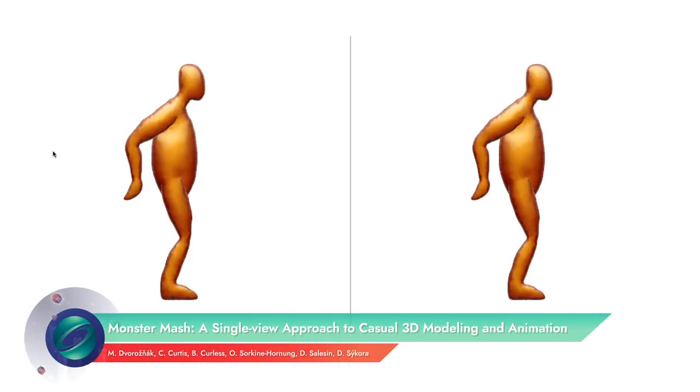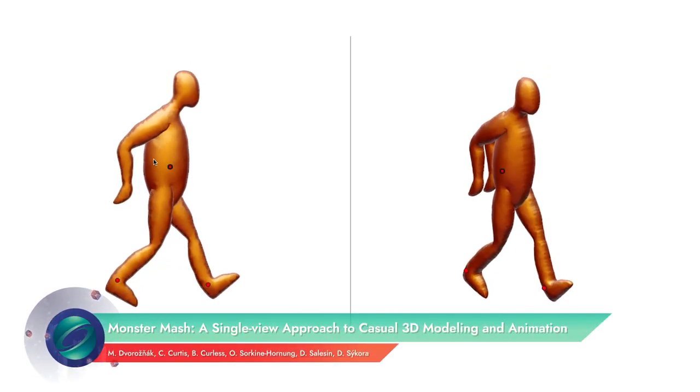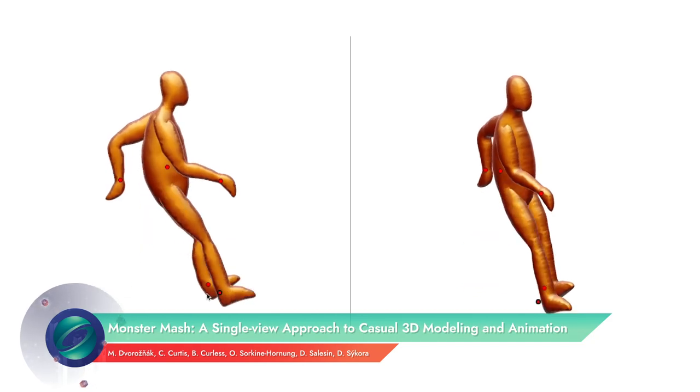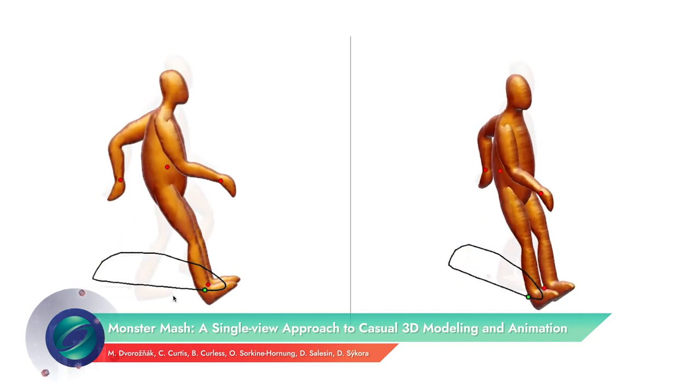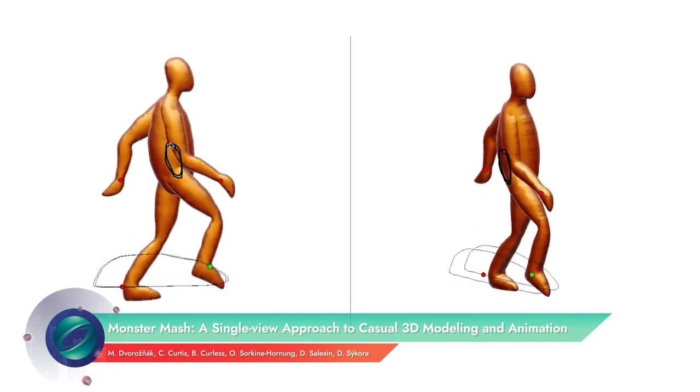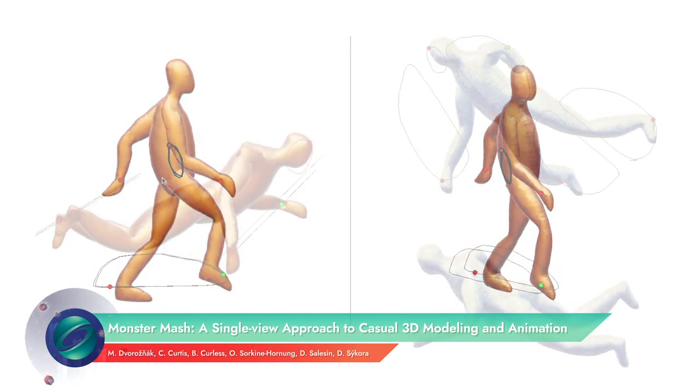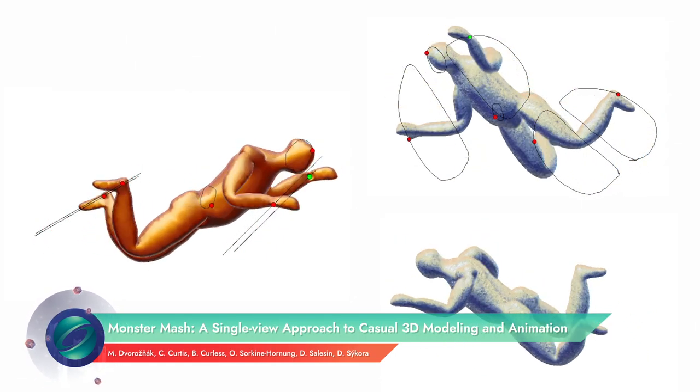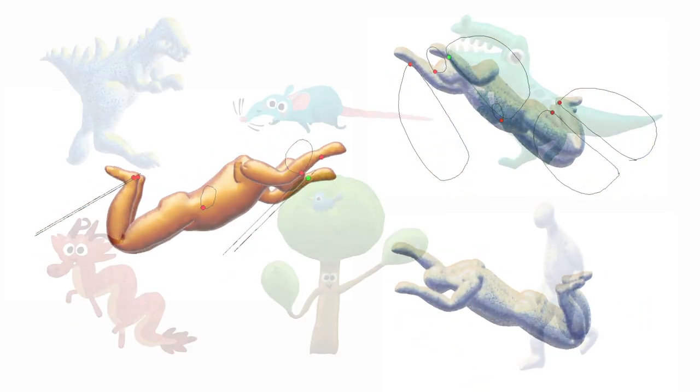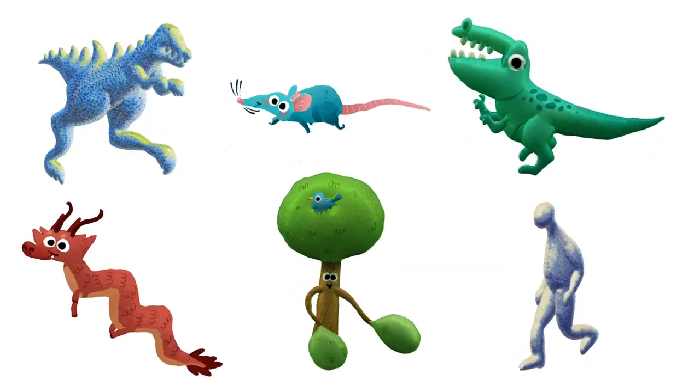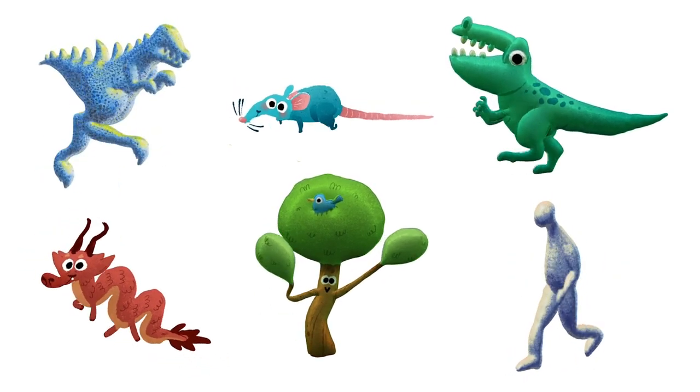There is a maxim that a casual mode of expression is crucial to the creative process, something which animation has never truly had until Monster Mash. 3D models can be created and animated from a sketch without any rigging. A mesh is generated and coupled with a set of constraints that drive a rigidity-preserving deformation model.